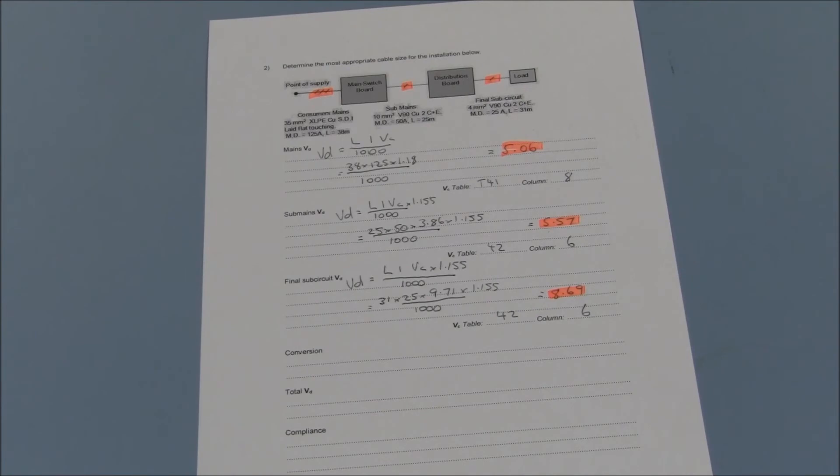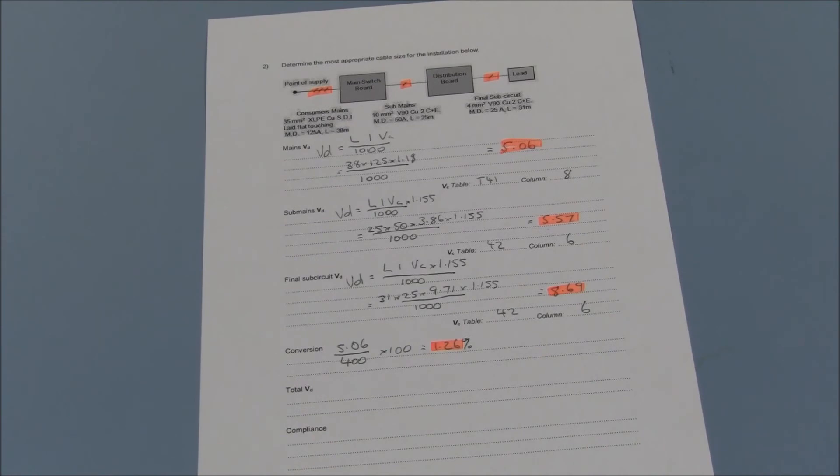We can now start translating these values into percentages of the relevant voltages. For the consumers mains, we had a drop of 5.06 volts. That drop is 1.26% of the supply voltage of 400 volts.